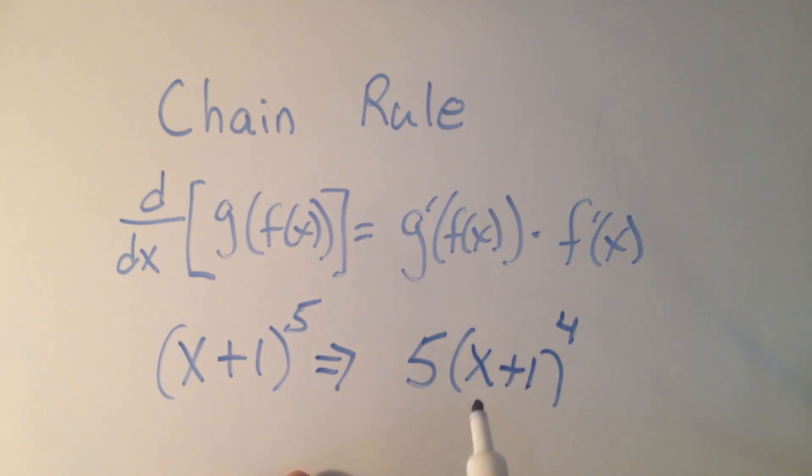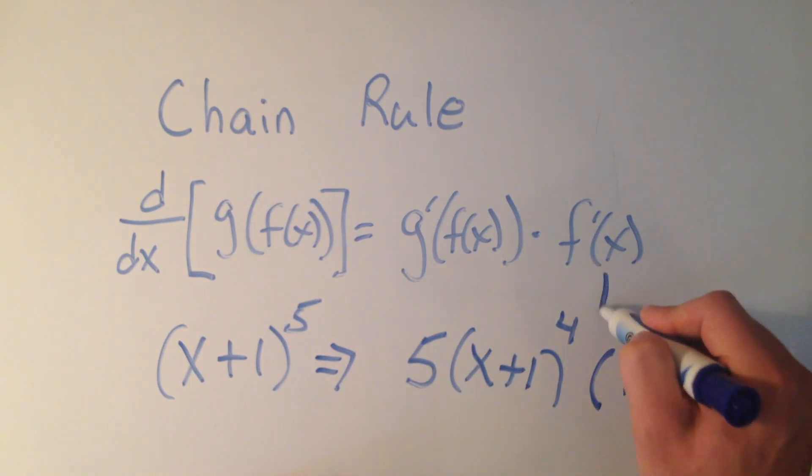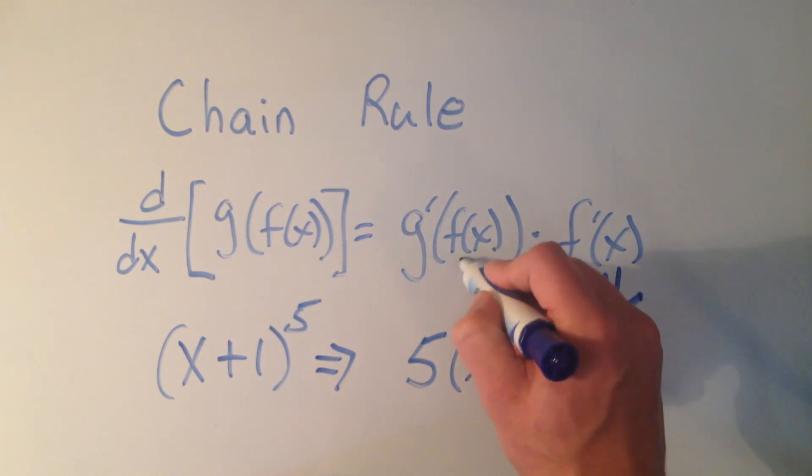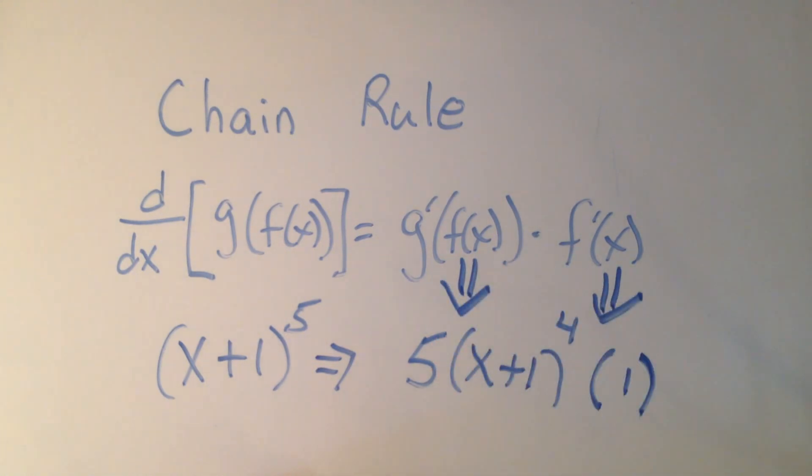That was our outside function. Our inside function is x+1, and the derivative of x+1 is just 1. So if you can kind of see that f'(x) is 1, and g'(f(x)) is 5(x+1)^4, then you followed me well. But this is very confusing, and we're going to do a couple more examples. Let's go. Now we're going to take two examples of this.